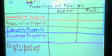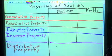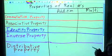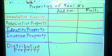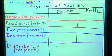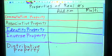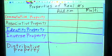In the second part of Chapter 1, Section 2, we want to talk about the properties of real numbers. These are very basic properties. You've learned them before multiple times in junior high and also last year in Algebra 1.